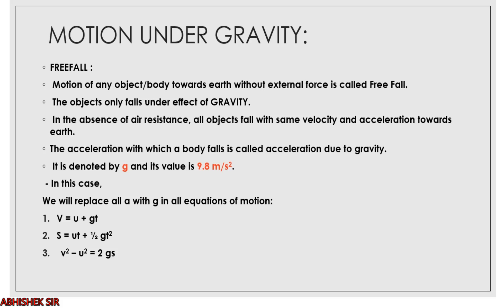In free fall, there is no external force — only the force of gravity. We also neglect air resistance. If we neglect air resistance, all objects fall with the same velocity and acceleration towards the earth. The acceleration with which a body falls in free fall is called acceleration due to gravity, denoted by small g. Its average value is taken as 9.8 m/s².